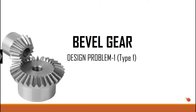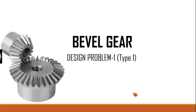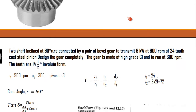Today we will solve a problem from the bevel gear. The problem is of type 1 where the number of teeth is given. Two shafts inclined at 60 degrees are connected by a pair of bevel gears to transmit 9 kW at 900 rpm of a 24-tooth cast steel pinion. Design the gear completely. The gear is made of high grade cast iron and runs at 300 rpm. The teeth are 14.5 degree involute form.